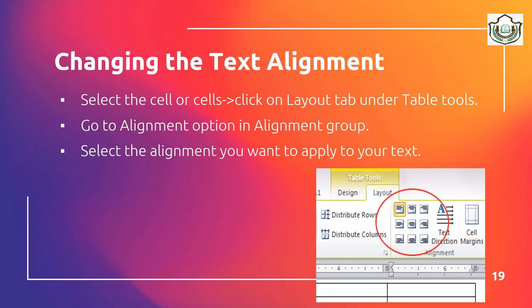You can change the text alignment as well. Select the cell or cells, click on the Layout tab, then go to the Alignment option in the Alignment group, and select the alignment you want to apply to your text.